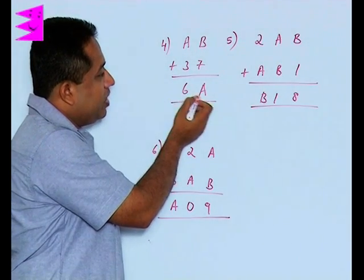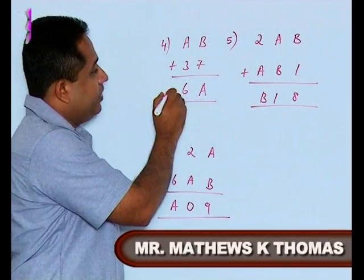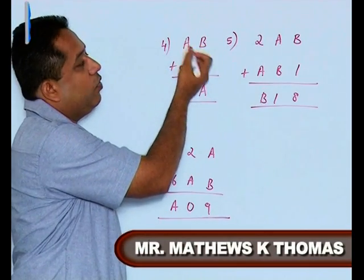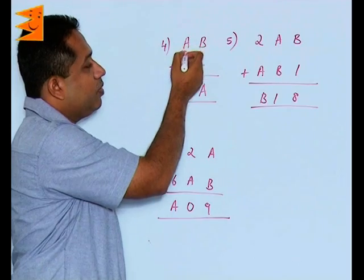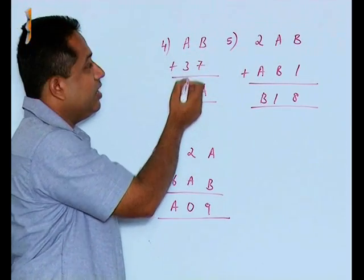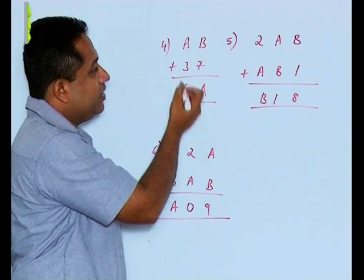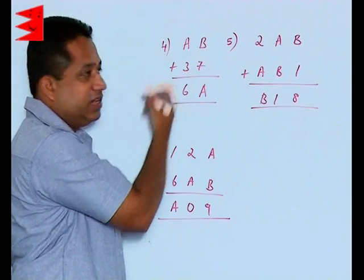Now if you notice here, this is a number in the 60s. If it is a number in the 60s, the value of A cannot be, let's say, 4 because if I'm taking 4, this will become 4 plus 3 is 7. So that will become a number in the 70s. By this question, it is clear that the value of A has to be less than 4.